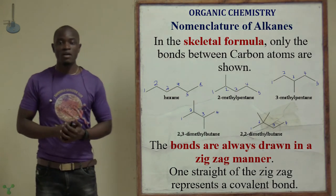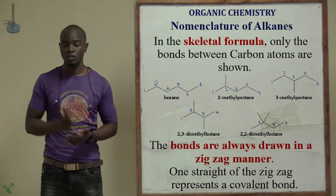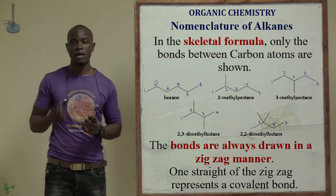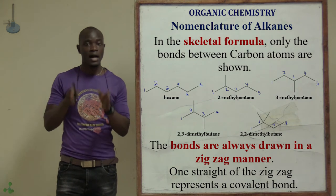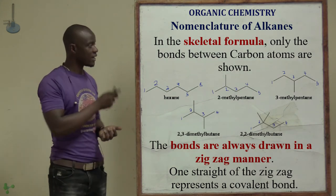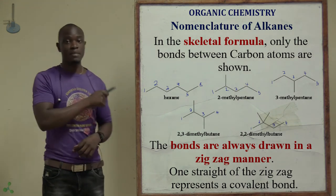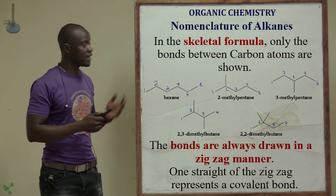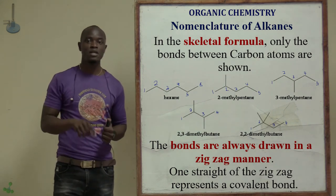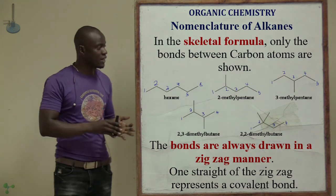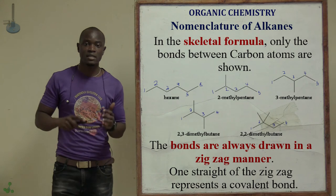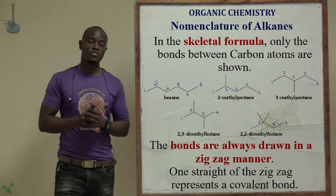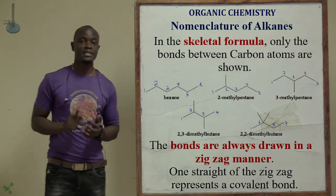In the skeletal formula of hydrocarbons, only the bonds between carbon atoms are shown. For example, in hexane, there are six corners to represent the positions of carbon atoms. Take note of the longest carbon chain — we also have examples like 2-methylpentane and 2,2-dimethylbutane, where the corners and longest carbon chain are most important.